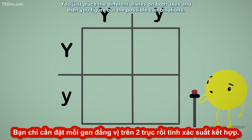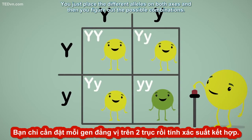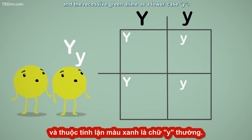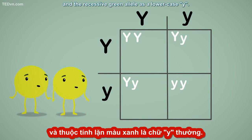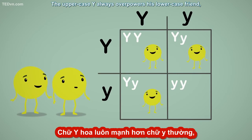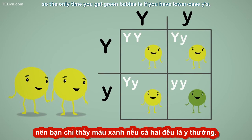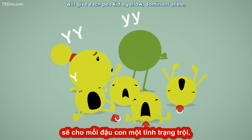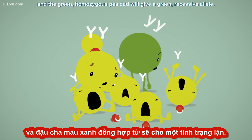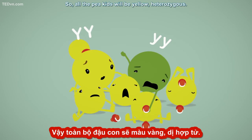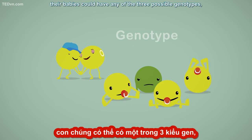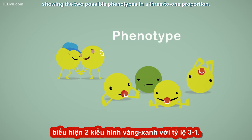Let's look at Mendel's peas for example. Let's write the dominant yellow allele as an upper case Y and the recessive green allele as a lower case y. The upper case Y always overpowers its lower case counterpart, so the only time you'd get green seeds is if you have two lower case y's. In Mendel's first generation, the yellow homozygous pea mom will give each pea kid a yellow dominant allele, and the green homozygous pea dad will give a green recessive allele, so all the pea kids will be yellow heterozygous. Then, in the second generation, where the two heterozygous kids reproduce, their babies could have any of the three possible genotypes, showing the two possible phenotypes in a three to one proportion.